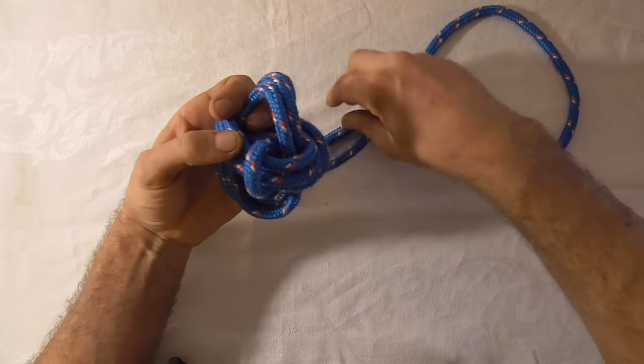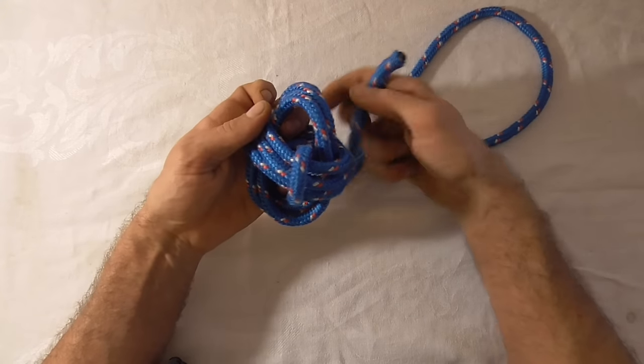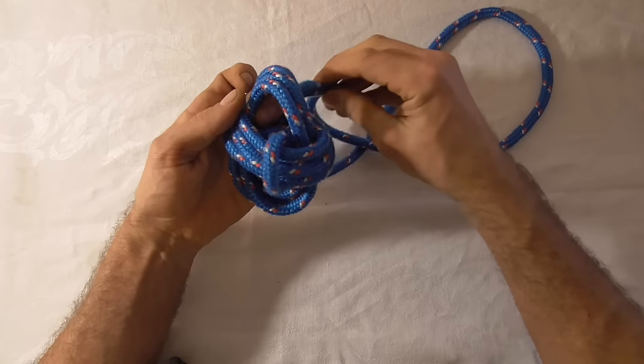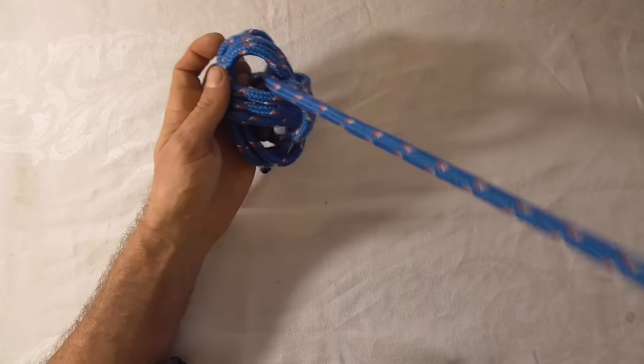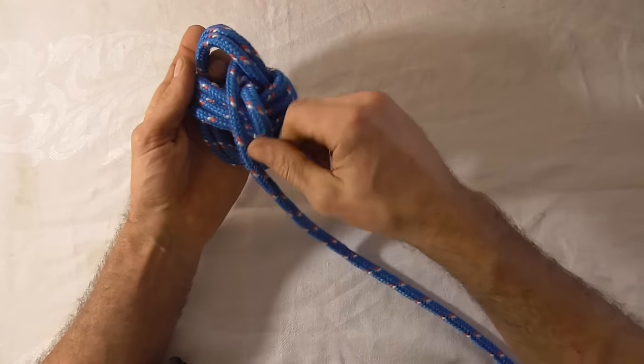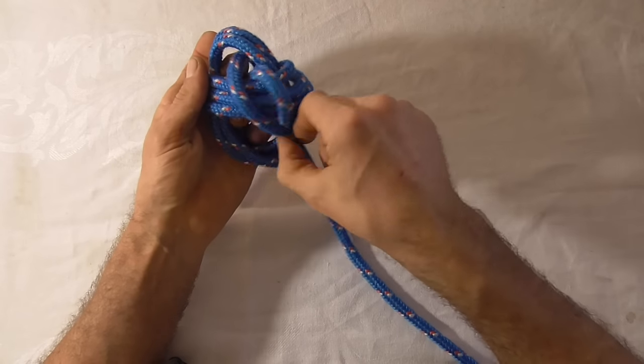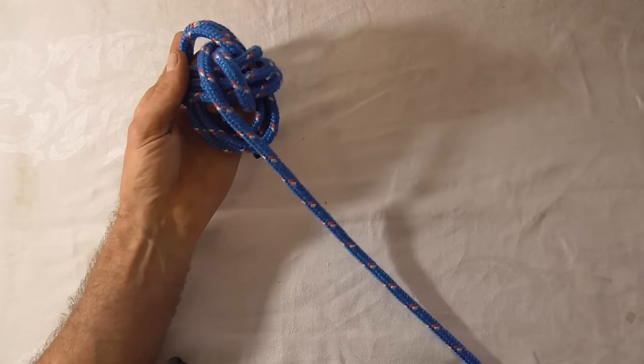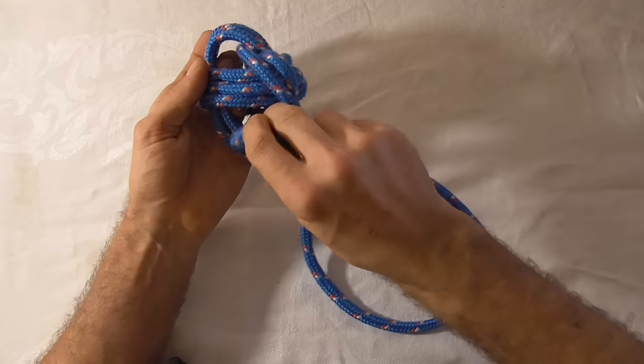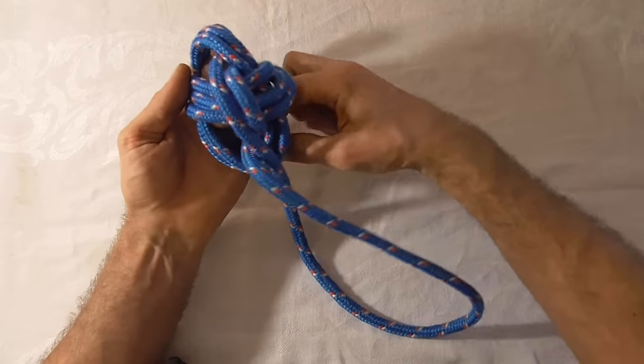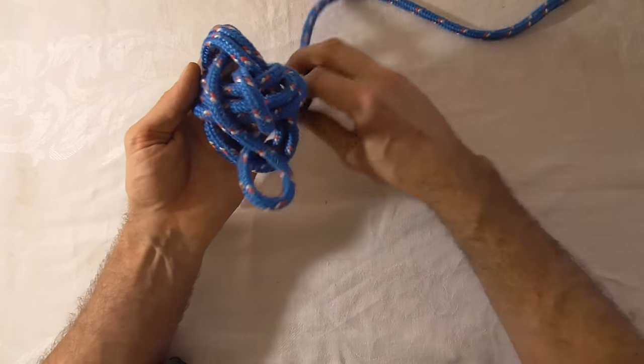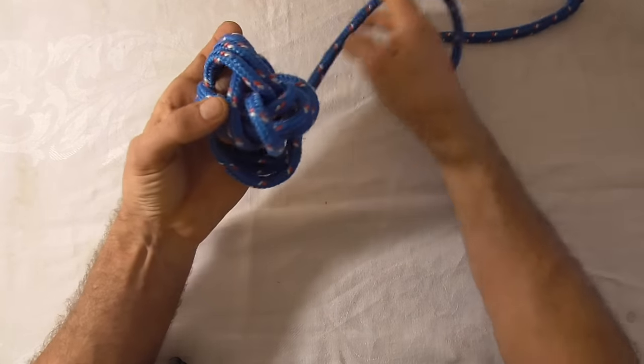And then up again through the top loop here. And that'll be our first wrap. And just be careful not to cross strands when you're working through here. Because it's going to be very difficult to uncross them later on when you're trying to tighten the whole knot up.